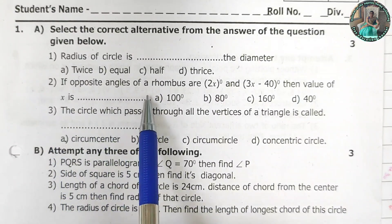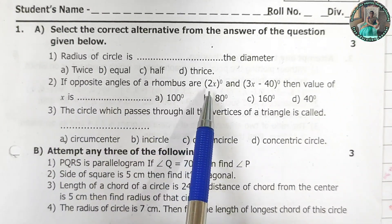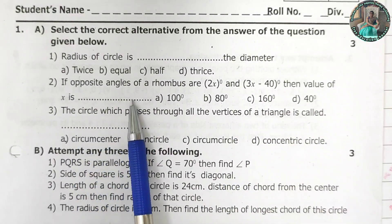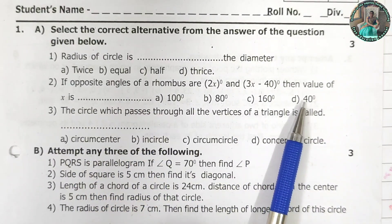If opposite angles of a rhombus are 2x degree and 3x minus 40 degree then value of x is dash dash. You have to choose the correct answer.